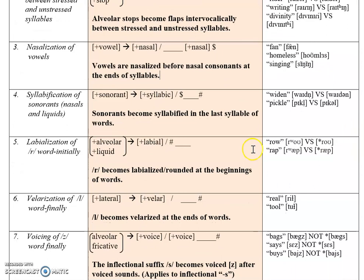Another rule that's pretty common — and something you don't realize you're doing — is nasalization of vowels. Any vowel gains the feature [+nasal] when there is a nasal consonant right after it, at the end of a syllable. Let's take a look at the word 'fan' as our sample.